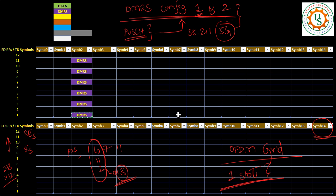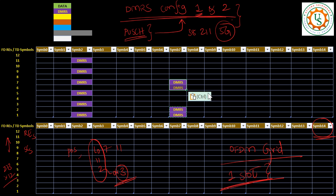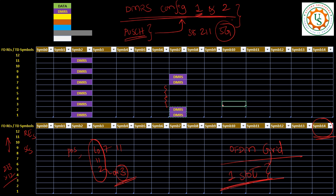For configuration type 2, the mapping is different - two resource elements are vacant between groups, so only four out of 12 REs are occupied by DMRS compared to six in config type 1. This is the key difference in how DMRS is mapped to the OFDM grid for configuration type 1 versus type 2. But we need to understand why this is done and why there are different config types.